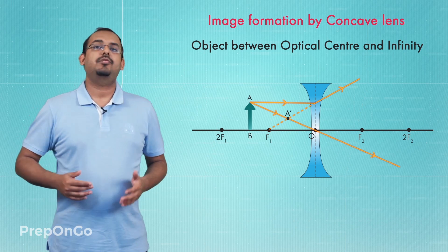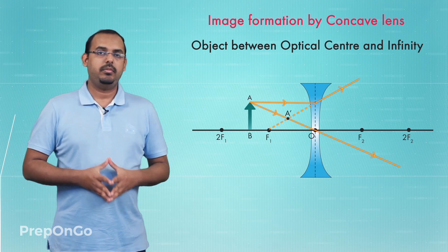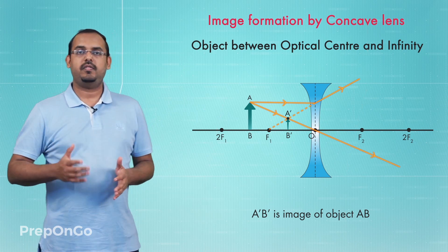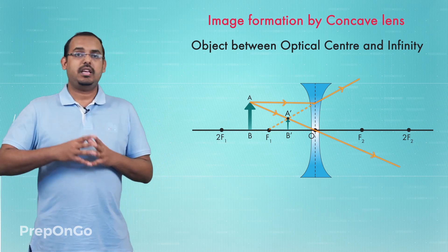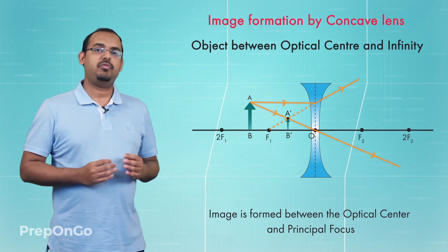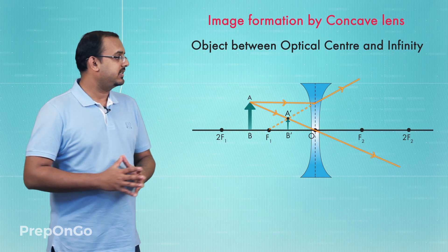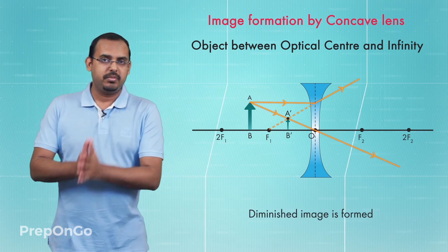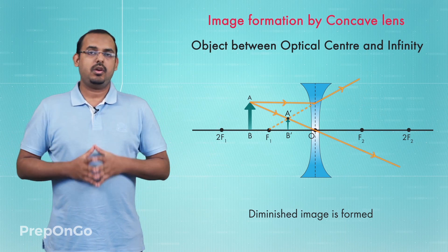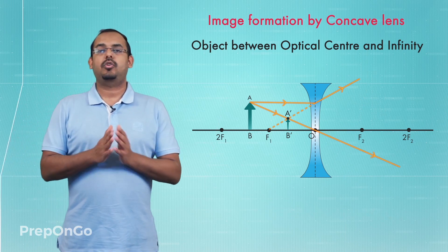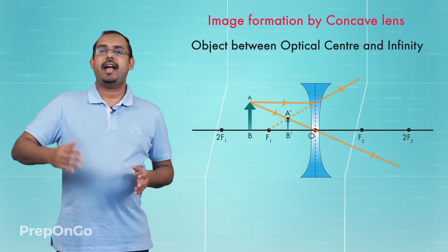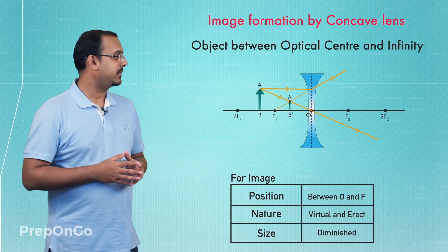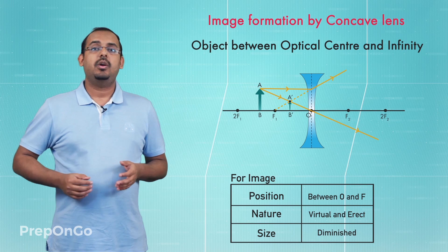Repeating this process for all points on the object, we trace the complete image A'B' of object AB placed between the lens and infinity. The image is formed between the optical center and the principal focus of the concave lens. The image is virtual and erect in orientation, and diminished in size when compared to the original object.